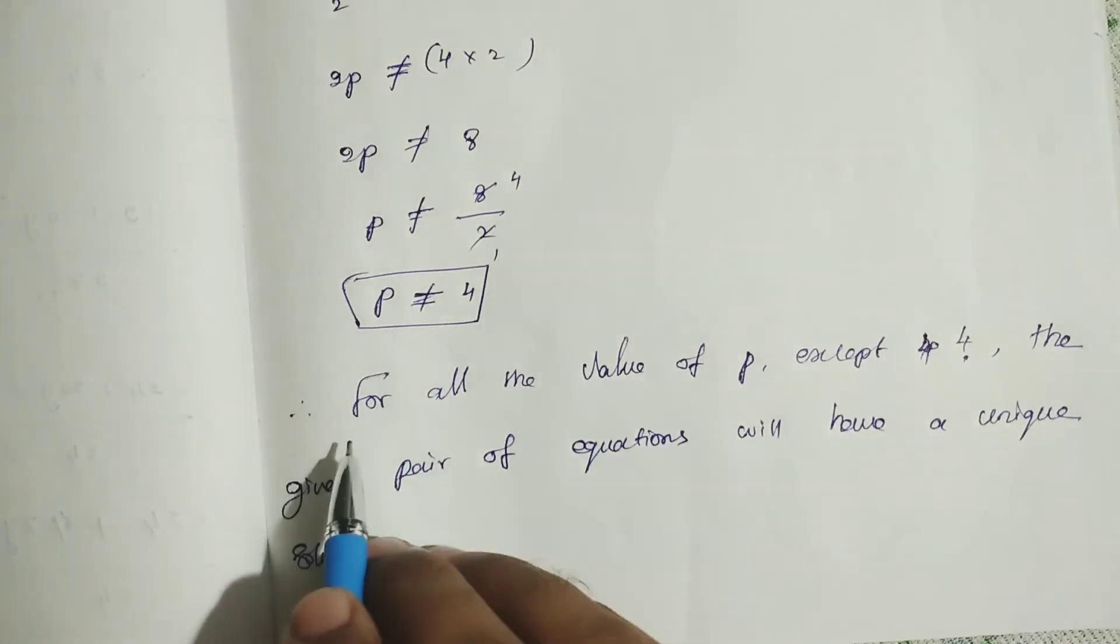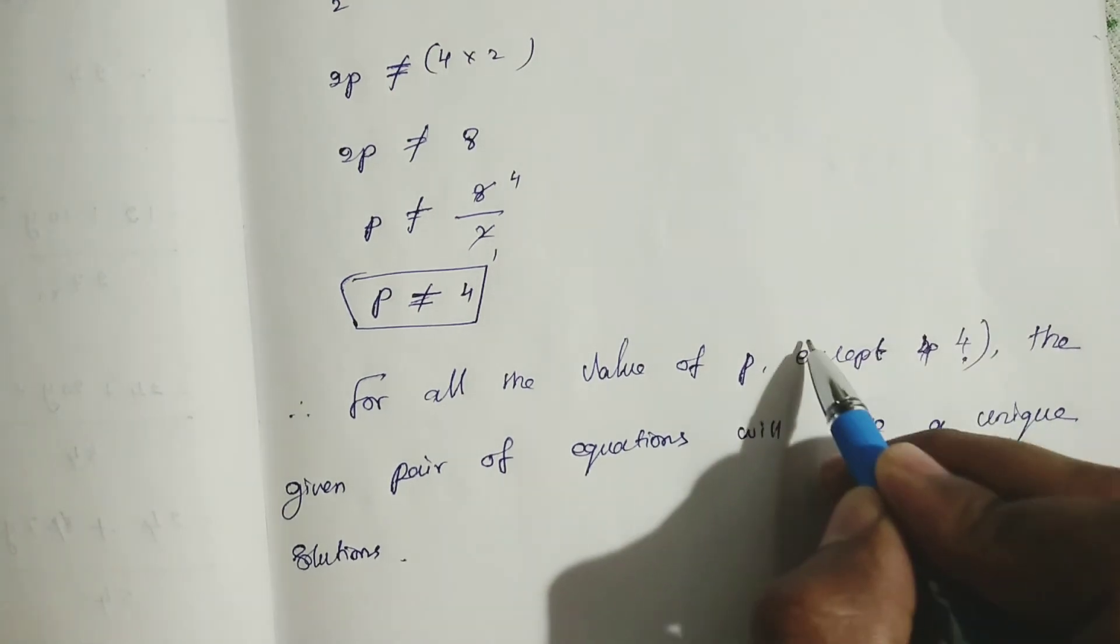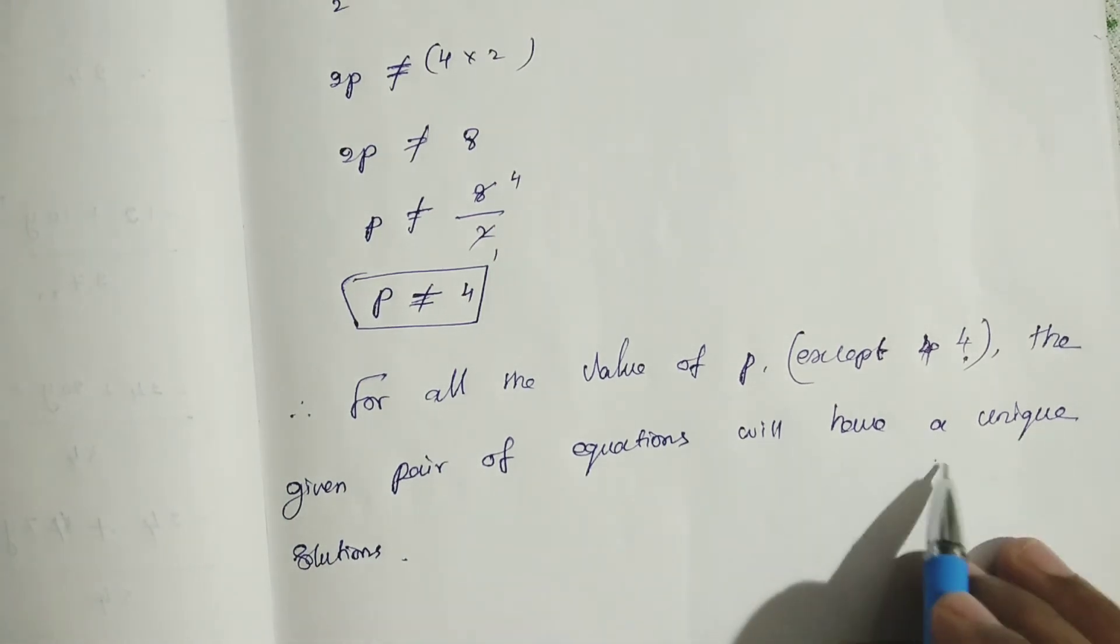Therefore, we can say, for all the values of p, except 4, the given pair of equations will have a unique solution. Are you all clear?